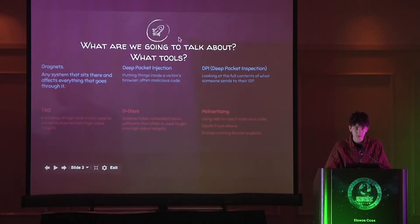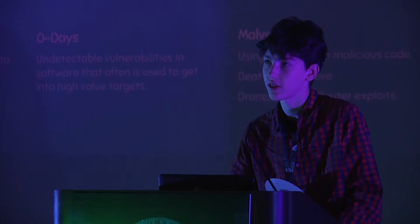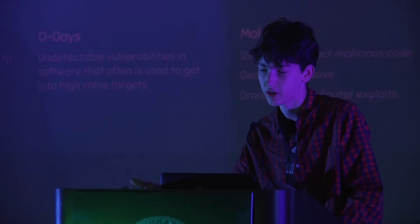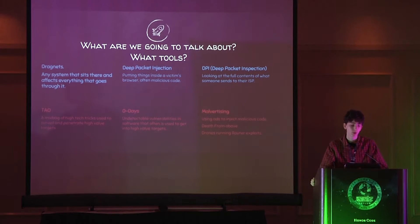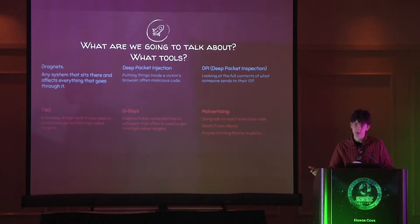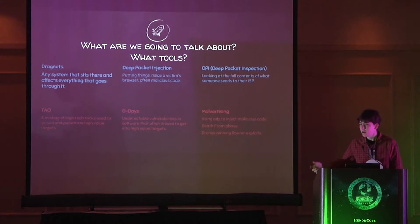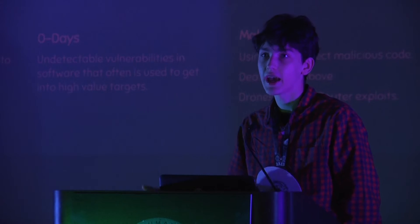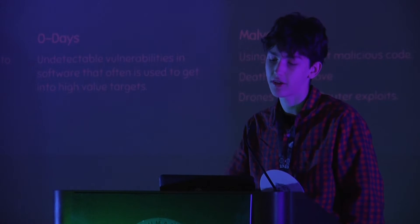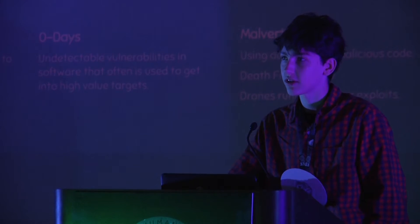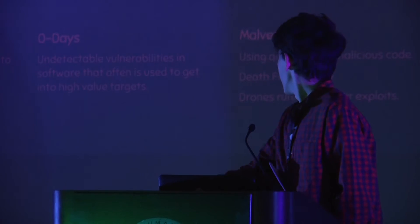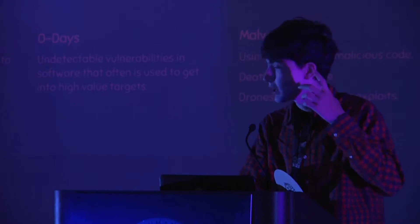What that entails is basically two different schools of tactics. The first are dragnets, which are things that just sit there passively and either collect or inject packets — so they change what you see when you browse the web, or they just collect what you see. The next set is called TAO, which is Tailored Access and Operations, which is basically hacking into things that a government deems high value targets. Those are done through methods like social engineering, using zero days, or malvertising.